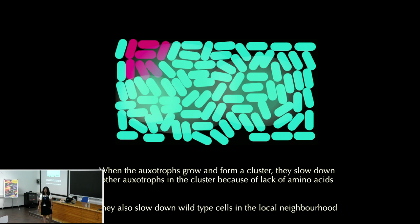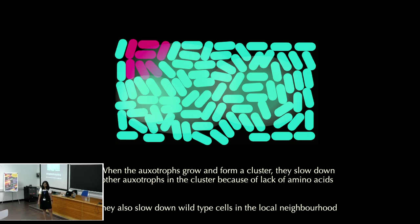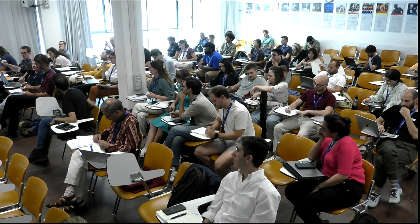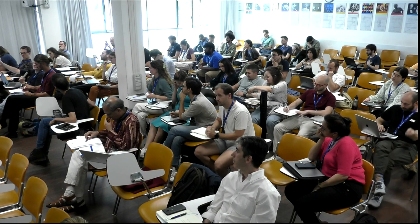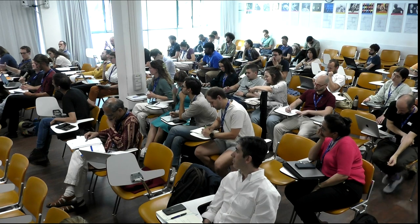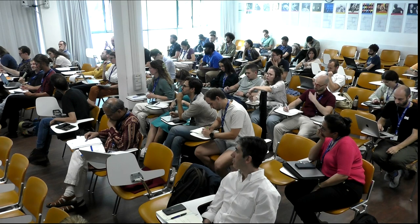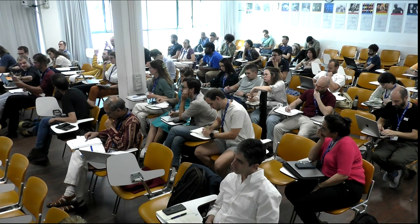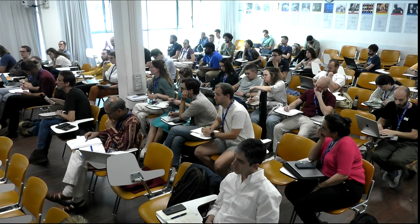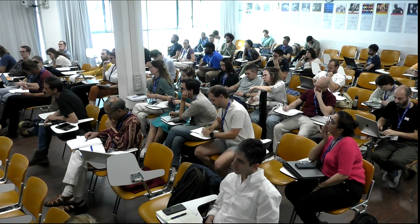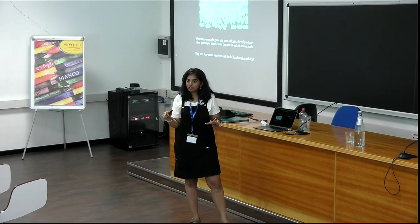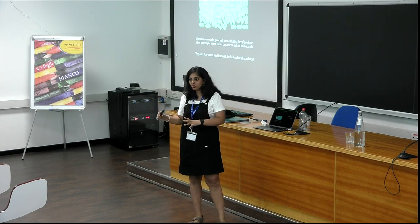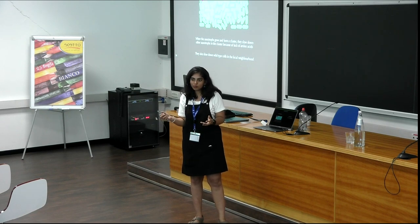A question was raised about whether we're controlling for the total number of cells in the neighborhood, since denser neighborhoods might cause slower growth and also correlate with having more pink cells. Yes, we make sure that the local density is the same. As seen in the movies, the microfluidic chambers are always full — cells are always packed, uniformly distributed, with no empty spaces.